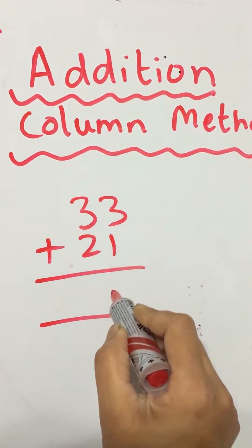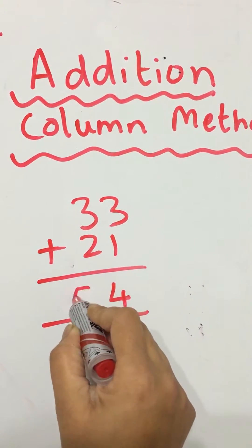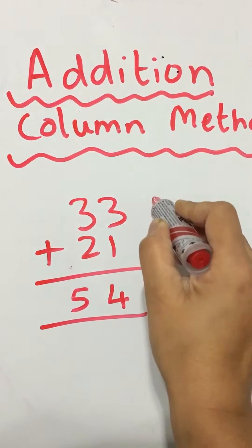3 add 1 is 4 and 3 add 2 is 5. So that is straightforward and we are moving down.